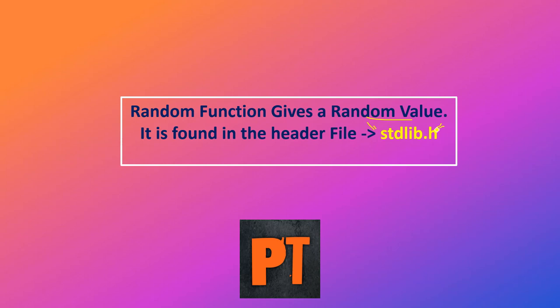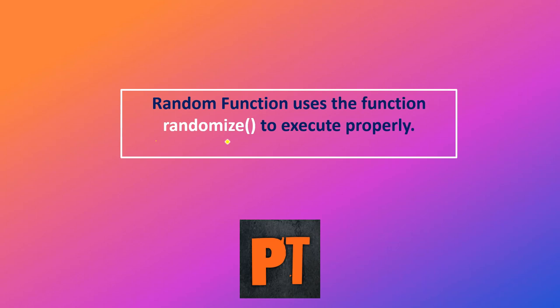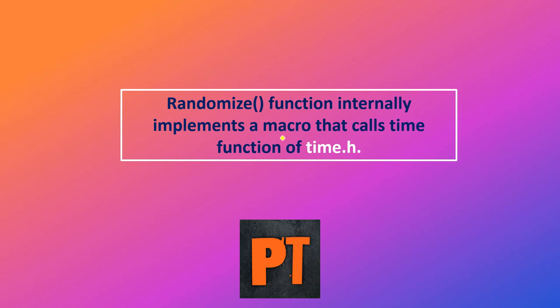The random function uses the function randomize to execute properly. Now, your teacher will tell you that the randomize function is used — but what does the randomize function do? Random function internally implements a macro that calls the time function of time.h, which is a header file.